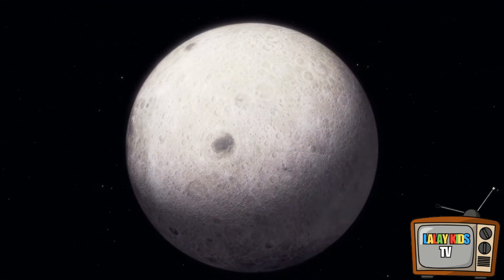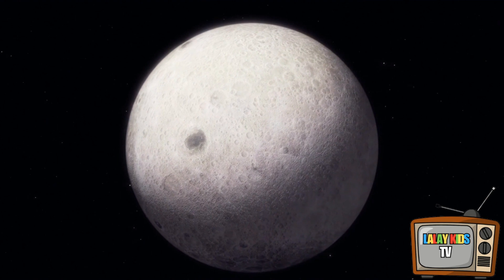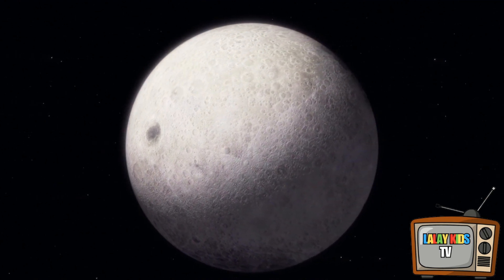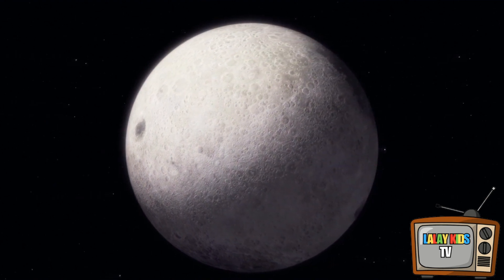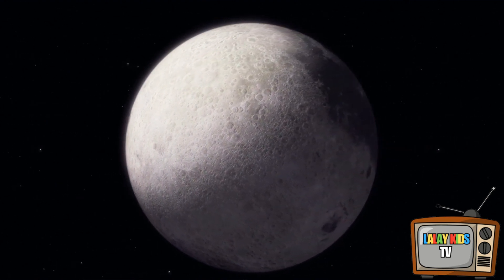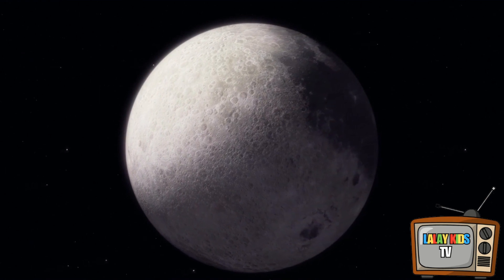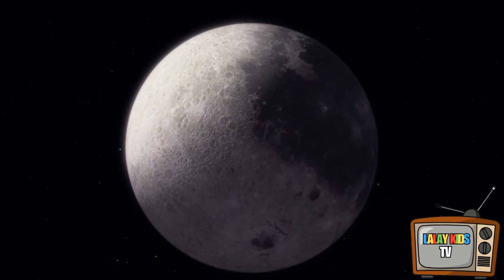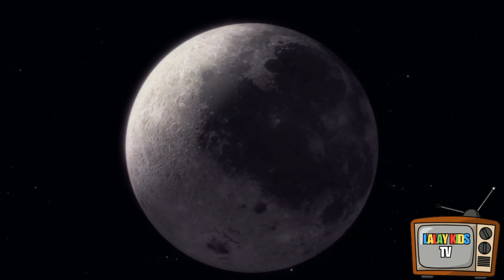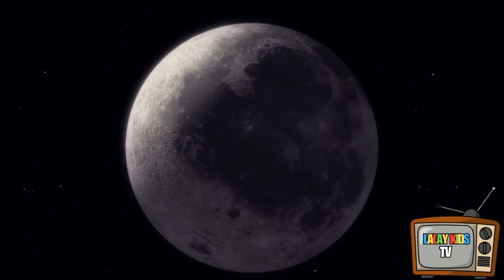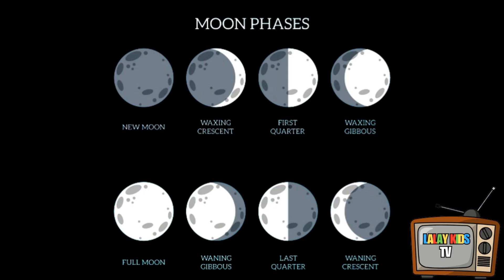The dust on the moon is called lunar regolith. It's made up of rock chips, mineral fragments, impact and volcanic glasses, and a peculiar component only found on the moon called agglutinates. One of the moon's most visible and intriguing aspects is its changing appearance, known as lunar phases.